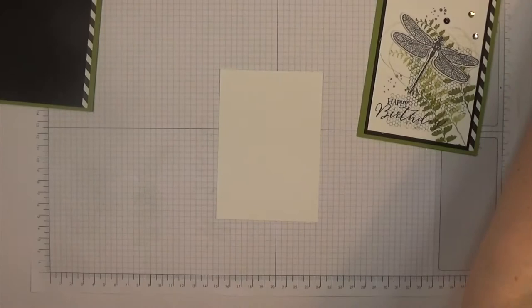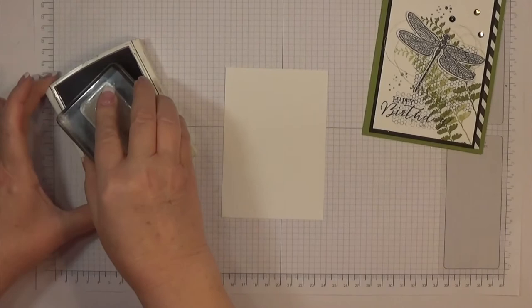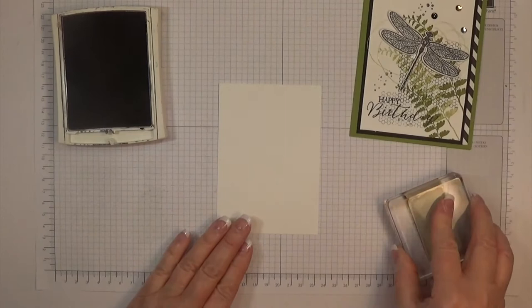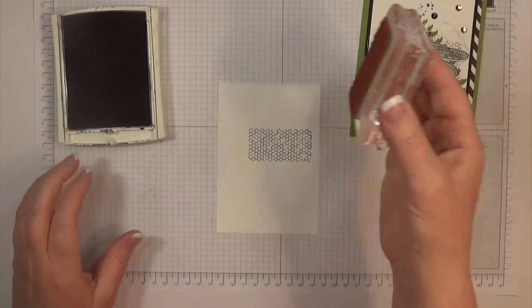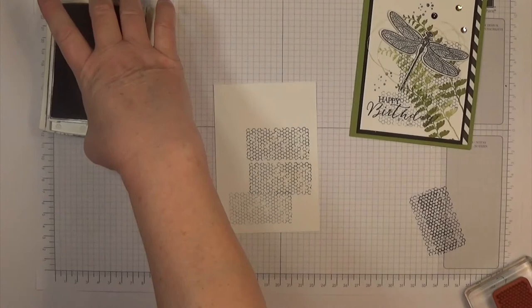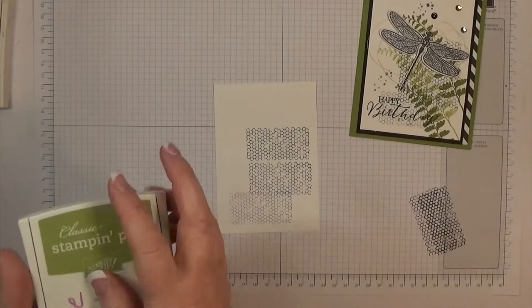To stamp the honeycomb, I'm going to use basic black ink. I'm going to stamp off a little bit because I don't want my basic black to be so dark. I'm going to stamp off once on my scrap and then stamp once, and then stamp again, and then again down here. I'm just creating a background to work on top of.